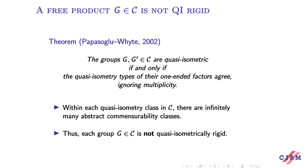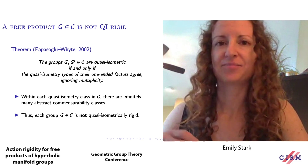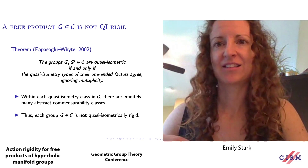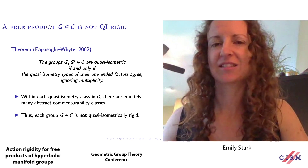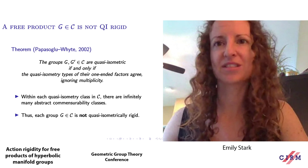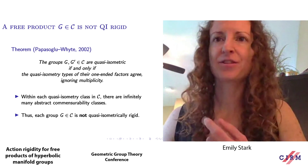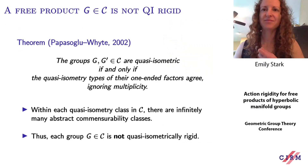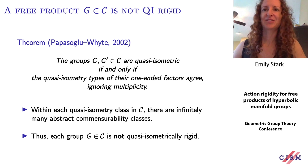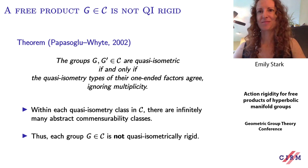Within every quasi-isometry class of these free products of closed hyperbolic manifold groups, there are infinitely many abstract commensurability classes. If there's a manifold in the free product of dimension at least 3, this follows from classical commensurability results. There's also an argument of Whyte in dimension 2 that generalizes to all groups in this class, proving that for every group in this class there are groups quasi-isometric to it that are not abstractly commensurable. In other words, every free product of closed hyperbolic manifold groups is not quasi-isometrically rigid.